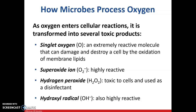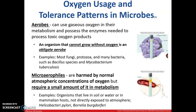As oxygen enters cellular reactions, it is transformed into several toxic byproducts: singlet oxygen, superoxide ion, hydrogen peroxide, and the hydroxyl radical. Be familiar with these terms and know that these are toxic byproducts produced when microbes process oxygen.